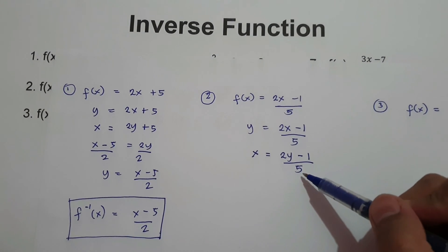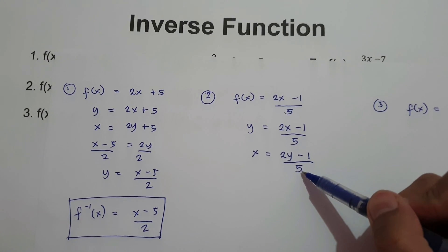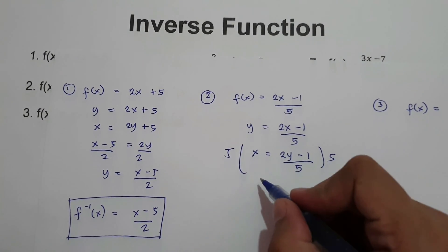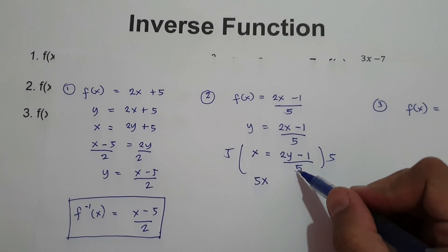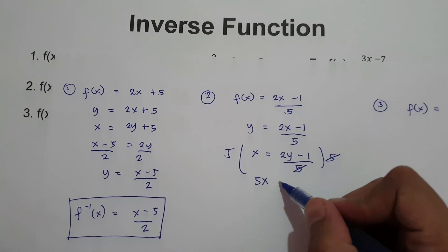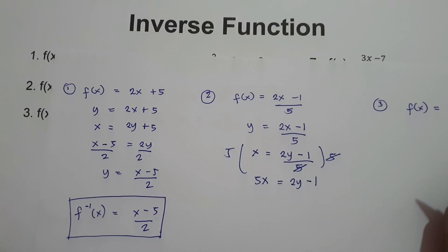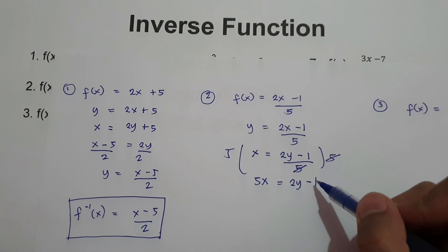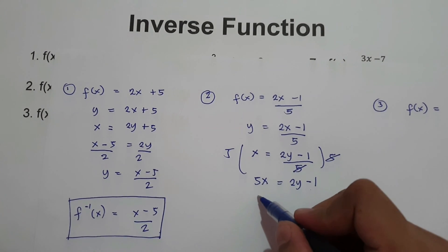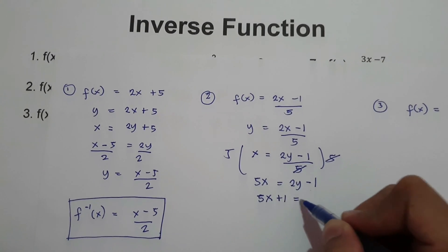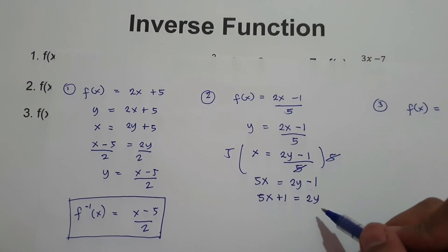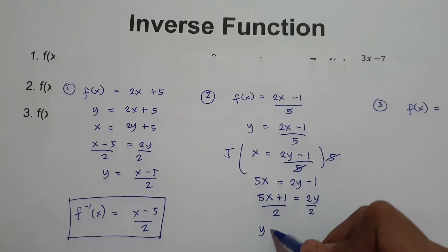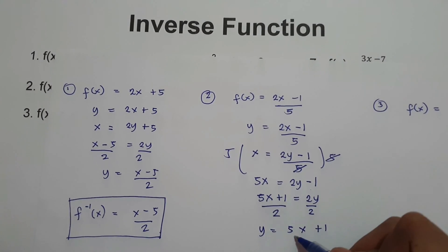Then, to eliminate the denominator, I'm going to multiply the whole equation by 5. 5 multiplied by x is 5x, and we cancel denominator 5 and 5, giving us 2y minus 1. Next, we are going to express this equation in terms of y. Moving negative 1 to the side of 5x, we have 5x plus 1 equals 2y. To isolate y, divide the whole equation by 2. So we have y equals 5x plus 1 over 2.